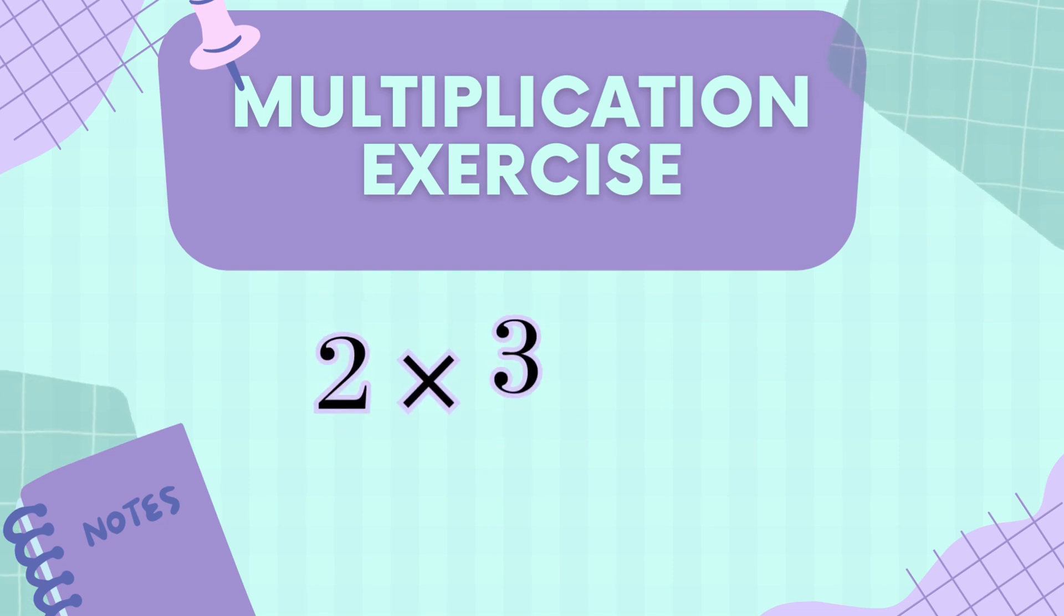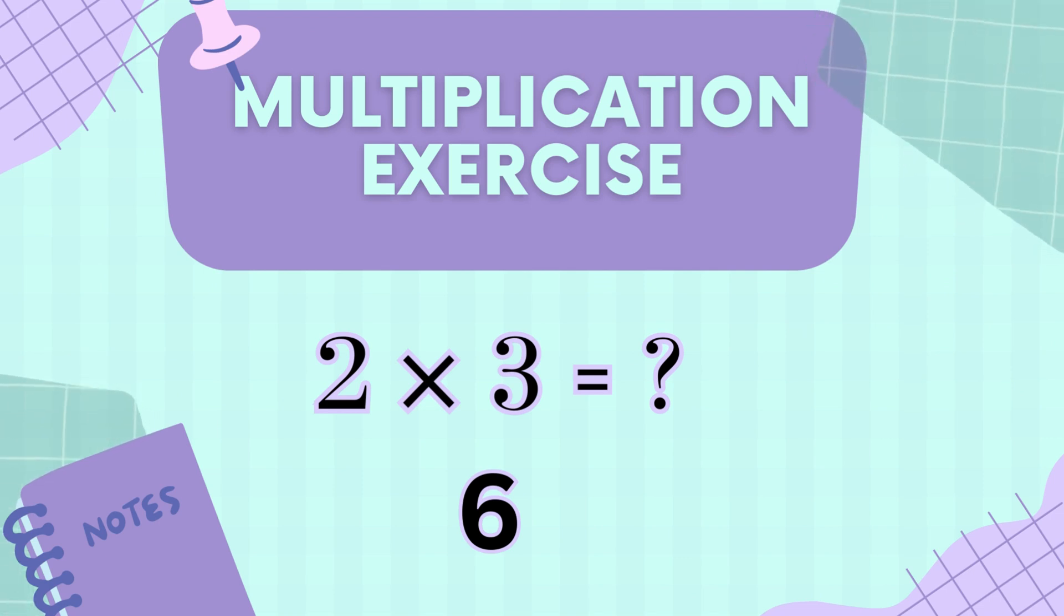And last but not least, two times three! Imagine two groups, each with three things! Count them! Three, six! That's six! See! Multiplication is like putting groups together, and when we add the same number over and over, we get our answers!